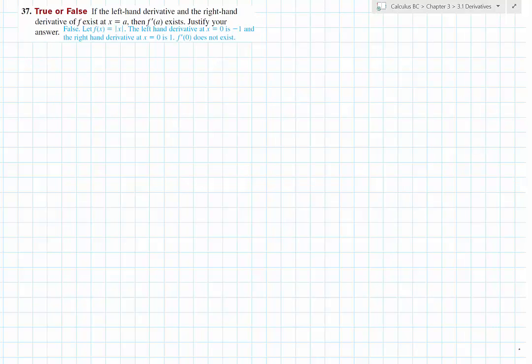Here's problem number 37 from section 3.1. It asks if the left-hand derivative and the right-hand derivative exists, does that mean that the derivative exists at that particular point?